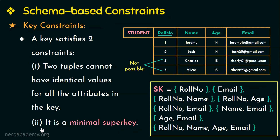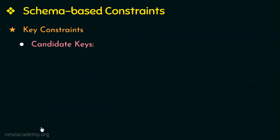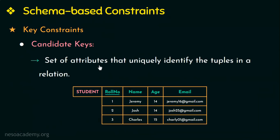A relation schema can have more than one key, in which case each key is called a candidate key. A candidate key is a set of attributes that uniquely identifies the tuples in a relation. In this student relation we have two candidate keys: roll number and email. We can have any number of candidate keys in a relation, but we designate only one of them as the primary key of that relation.